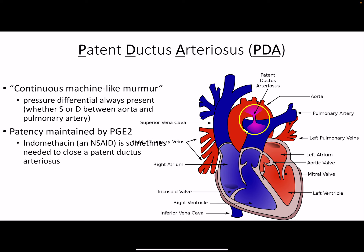Patent ductus arteriosus: the aorta is always at very high pressure compared to the pulmonary artery, so whether in systole or diastole, blood is always rushing through, creating a whooshing sound. This murmur is continuous — the only murmur that is both systolic and diastolic. It's louder during systole because the pressure differential is even larger then, but unlike VSD which is only heard during systole, the PDA murmur is always present. Prostaglandins keep it open, so indomethacin, an NSAID, is used to close it.